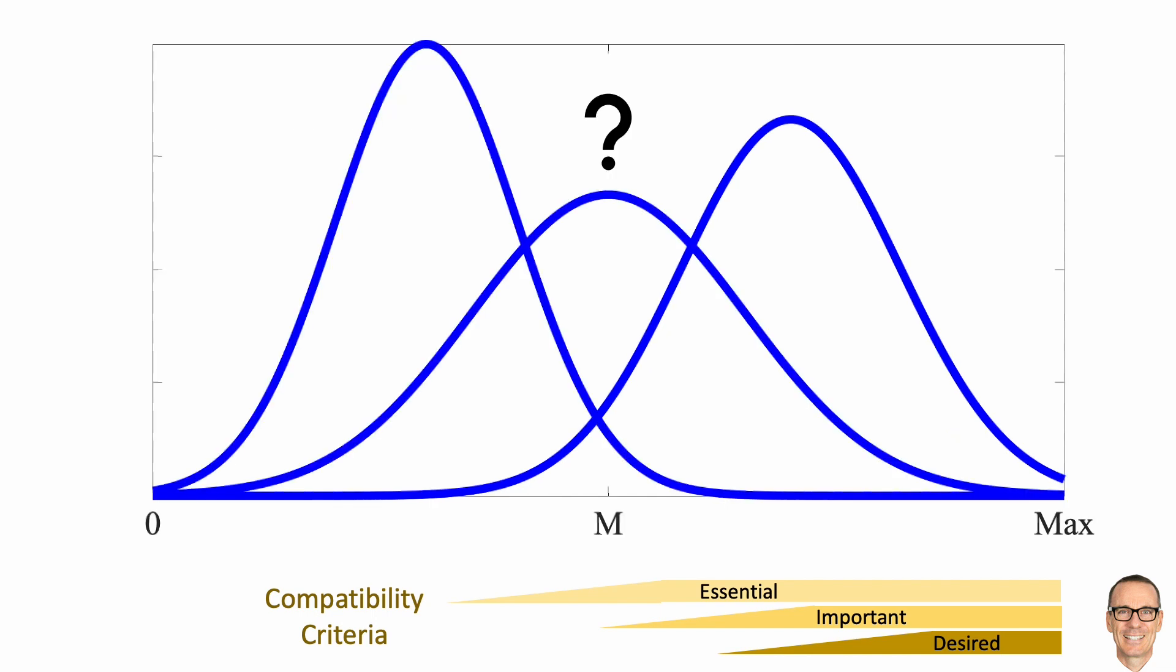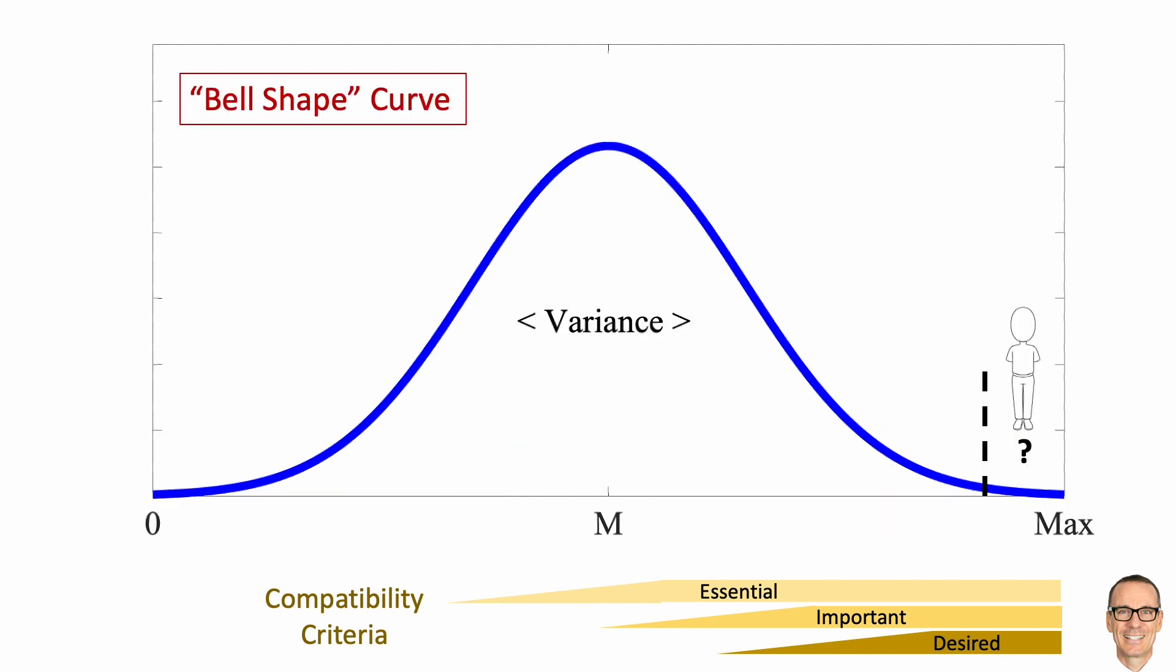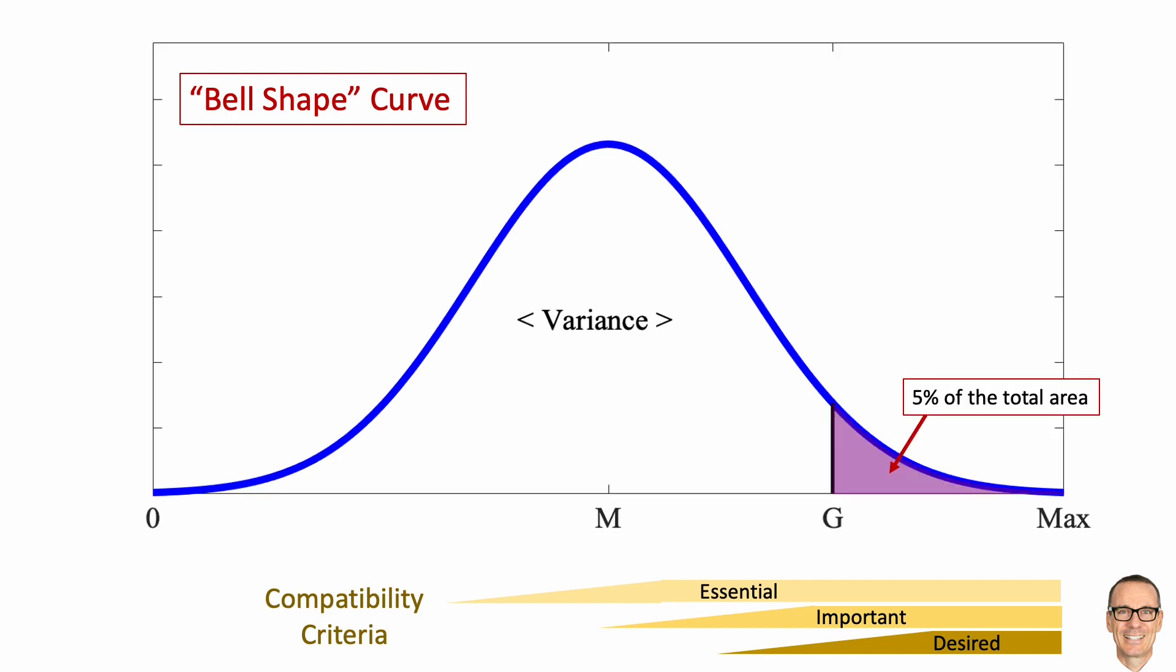And how do you set a threshold above which you'll be willing to propose marriage? If you set the threshold too high, you might find there's no one who qualifies and you'll spend a long time looking for them. So you might decide to set the threshold at the compatibility value where let's say 5% of the people are above that value.